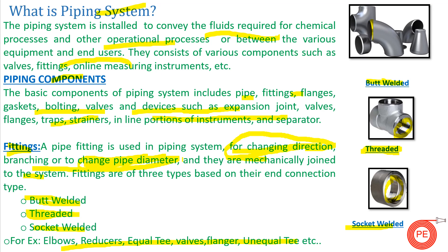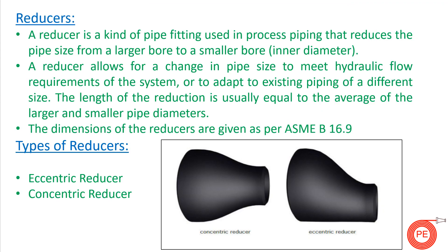Moving on to today's main topic — what is a reducer? As the name suggests, a reducer is a fitting that reduces the size of the pipe. A reducer is a kind of fitting used in process piping that reduces pipe size from a larger bore to a smaller bore.